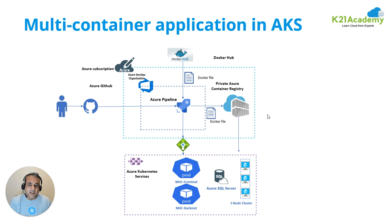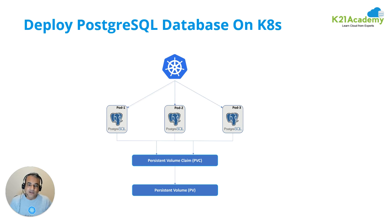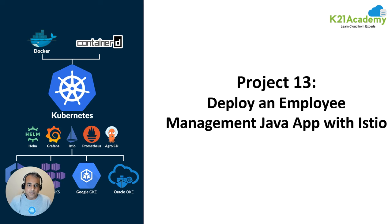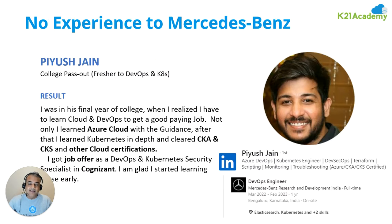For multi-container applications on AKS, we use Azure SQL at the backend with frontend and backend applications talking to the database. We also cover PostgreSQL with persistent volumes. Then there's the WordPress deployment project. If you want to go into Istio service mesh, you can use that project as well. You don't need to do all of them — maybe do one or two so you can write them in your resume as experience.